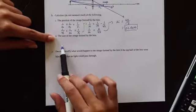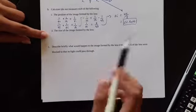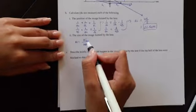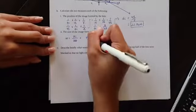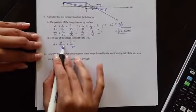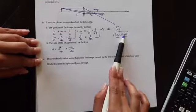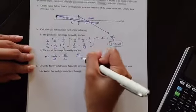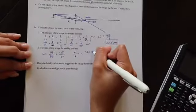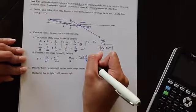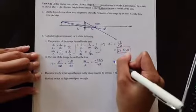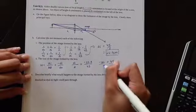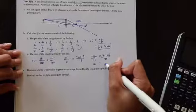For the second part of question B, it asks us to calculate the size of the image. We use the magnification formula: M = HI/HO = −DI/DO. We know HO = 8 cm, DI = 22.5 cm, and DO = 45 cm. Setting up: HI/8 = −22.5/45. Cross multiplying: −180 = 45·HI. Dividing by 45, HI = −4 cm.